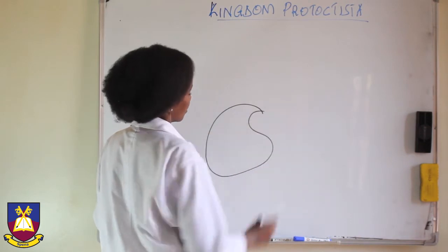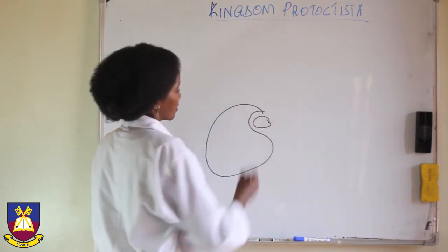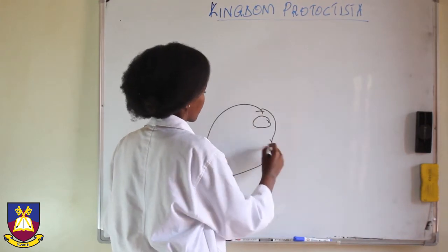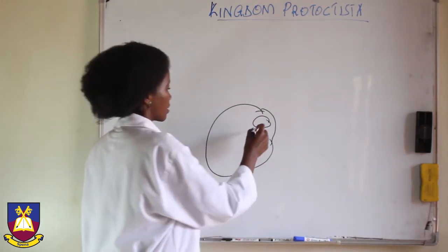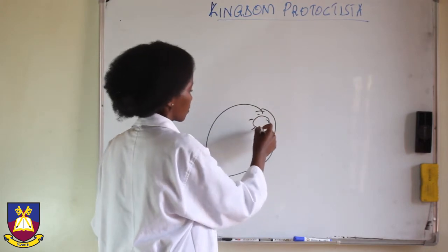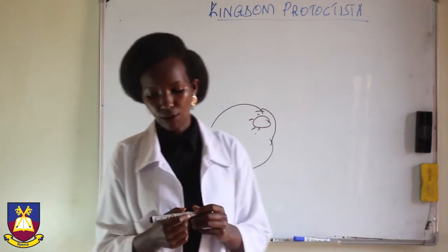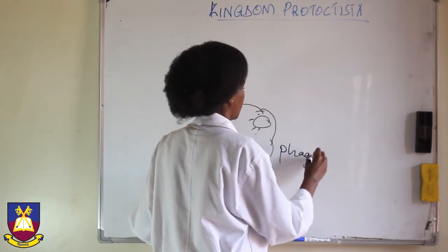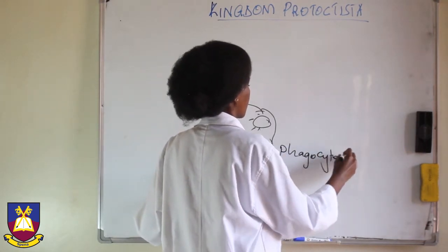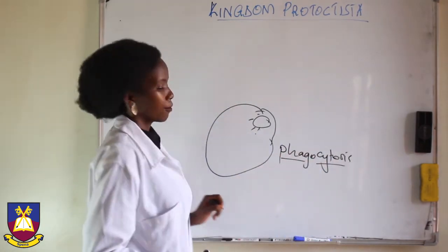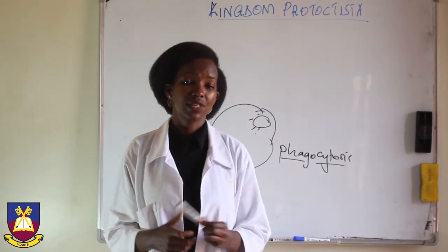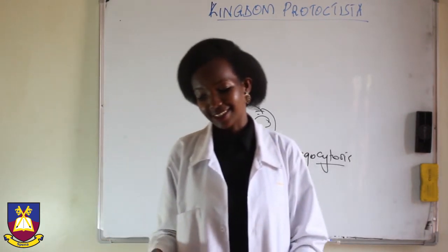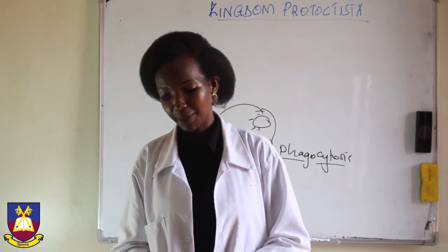By engulfing, we mean the cell finds a smaller cell and engulfs it. The smaller cell is then broken down inside, and the organism benefits from it. We call this phagocytosis — phago meaning eating, and cytosis meaning cell eating. So phagocytosis is a cell eating other particles.